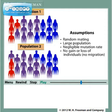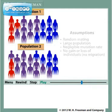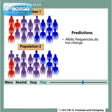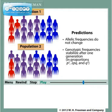For such populations, the Hardy-Weinberg law predicts that allelic frequencies do not change from one generation to the next, and that genotypic frequencies will stabilize after one generation in proportions P squared, 2PQ, and Q squared.